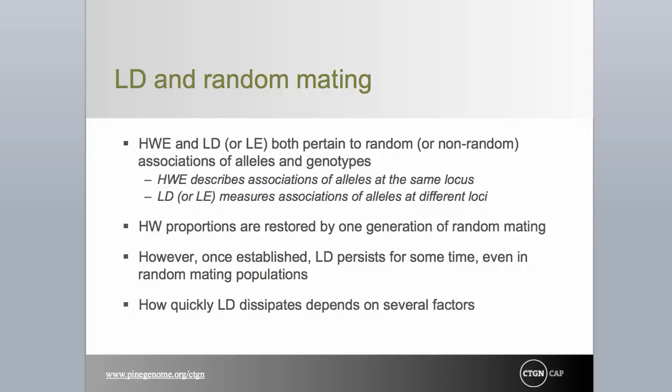Population geneticists like to view all evolutionary phenomena from a base case scenario that assumes random mating. Take LD, or its alternative linkage equilibrium, and the Hardy-Weinberg equilibrium — both relate to the random associations of alleles at one or more loci. The Hardy-Weinberg equilibrium mathematically describes the association of alleles at a single locus, or at two or more loci, assuming they are independent of one another. LD actually measures that level of independence by gauging whether alleles at different loci are statistically associated. Assuming no evolutionary forces at play, Hardy-Weinberg equilibrium is reached in one generation of random mating for loci not in LD, but for those that are, many generations of random mating are necessary to approximate equilibrium.